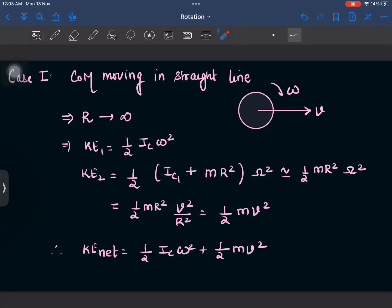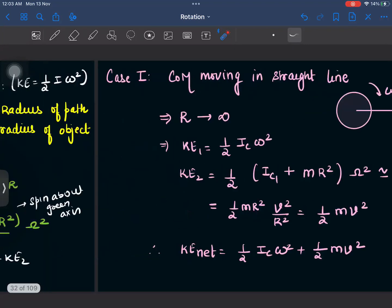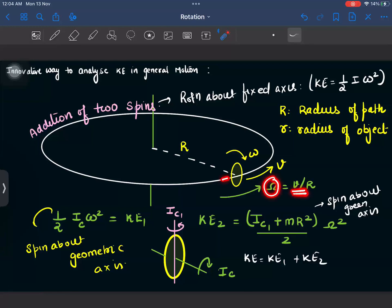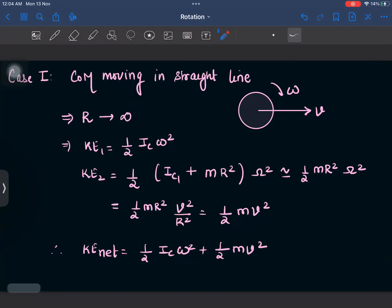Now dear students, what is the value of omega? Let us go back. This particular omega is V by R. This is from the simple concept of circular motion. When a point moves with the velocity V in a circular motion, then its angular velocity is given as V by radius of that circle. Now dear students, as I substitute the value of this omega to be V by R, this R square will get cancelled out and this will be half MV square. And if I add KE1 and KE2, all I get is half IC omega square plus half MV square. And this is the famous formula that we always learn in the course.